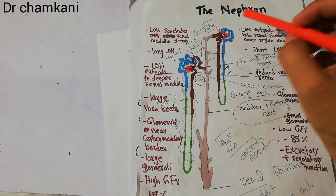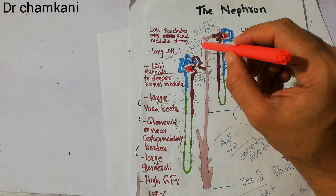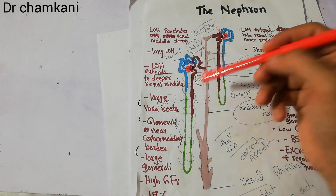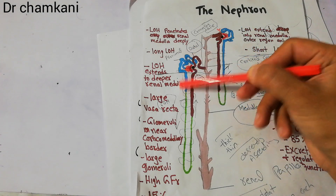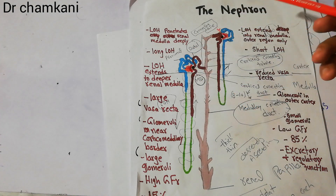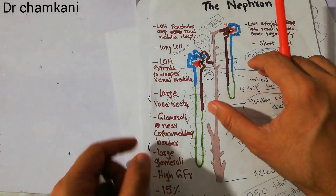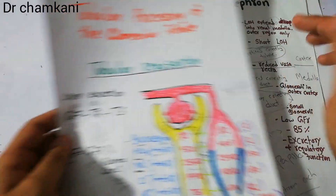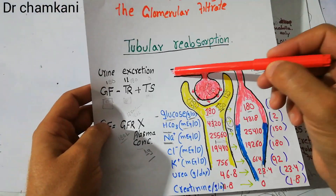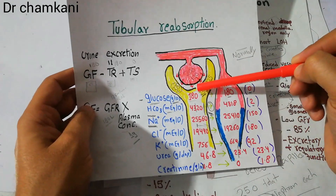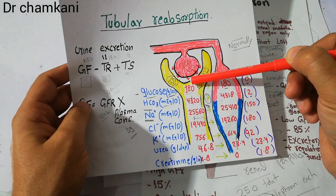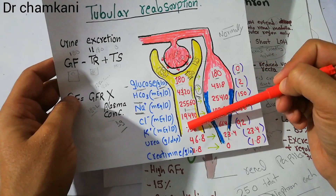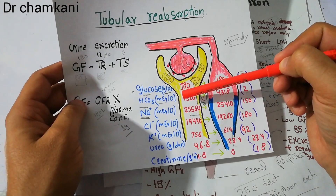The first and most important segment is the proximal tubule. This blue color segment is the proximal tubule. When the filtration process starts, the blood comes and it gets filtered into the Bowman's capsule. The filtrate initially enters the proximal tubule, which is basically the first segment of the nephron.